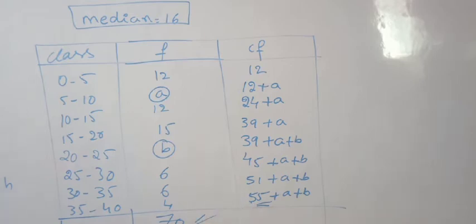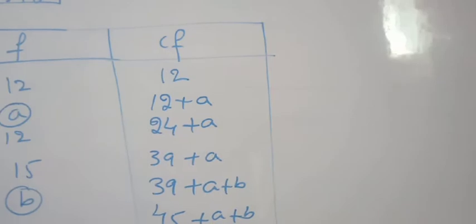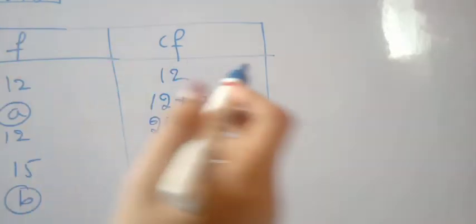So 55+A+B equals 70, since the last cumulative frequency equals the total of frequencies.